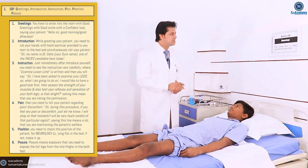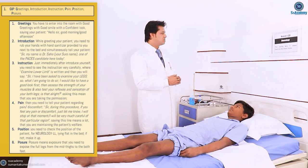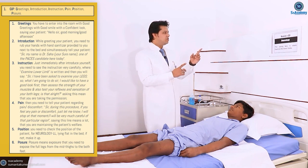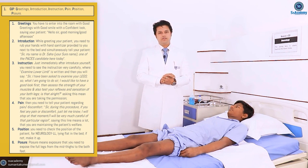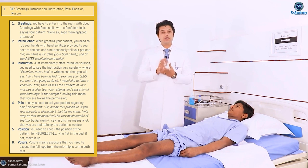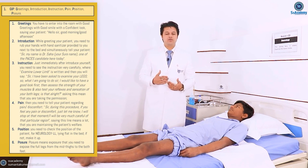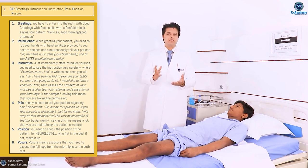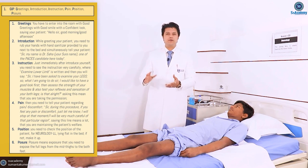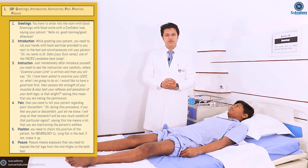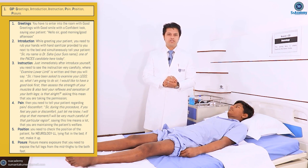For example, Station 3 Neurology: 'This young boy is ataxic — examine the lower legs.' So you need to tell your patient: 'Sir, I have been asked to examine your legs.' Give a brief description of what you're going to do — a good look and assessment of muscle strength or reflexes of the lower limbs. This is the instructions component.